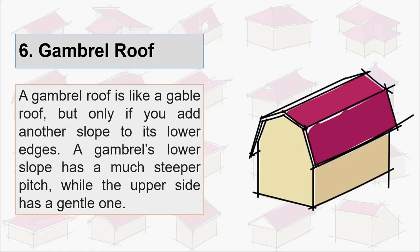Sixth is gambrel roof. A gambrel roof is like a gable roof but only if you add another slope to its lower edges. A gambrel's lower slope has a much steeper pitch while the upper side has a gentle one.